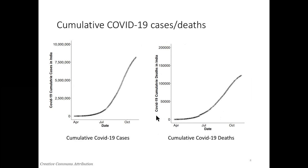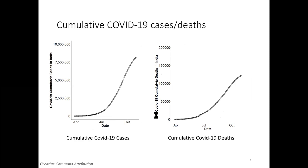Here again we see the cases and deaths over time, fitted onto a curve — the cumulative cases at the left and the deaths at the right — and also the individual data points without the fitting. This one shows new cases in each period; the cumulative would just be a sweeping upward curve and that's not so interesting.